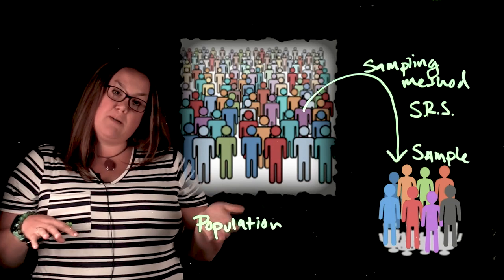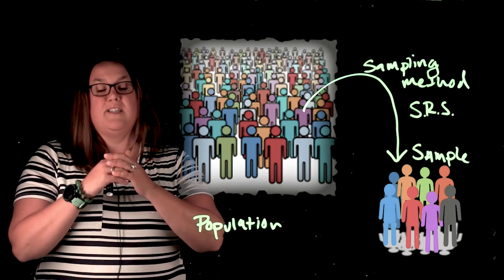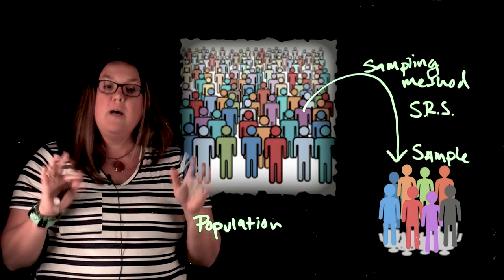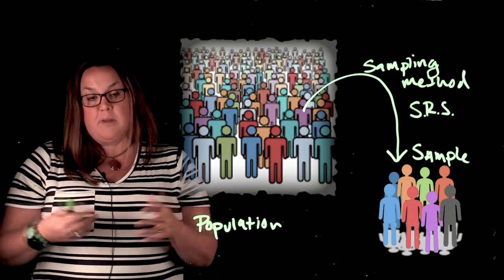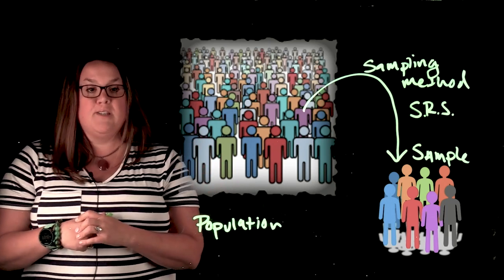A simple random sample tends to be the gold standard just because it's using some random method to select the individuals and all individuals in the population have the same chance of being selected.